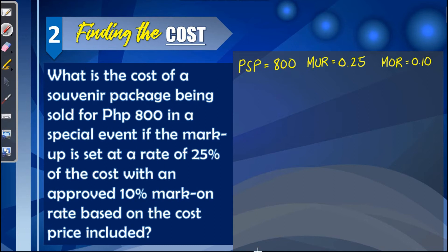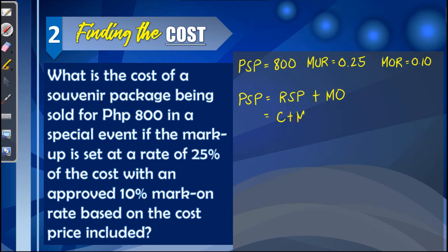To solve for the cost, since we have the peak selling price, we use the formula: PSP = RSP + MO. We don't know the regular selling price directly, but we know that RSP equals the sum of cost and markup. So: PSP = Cost + Markup + MO.